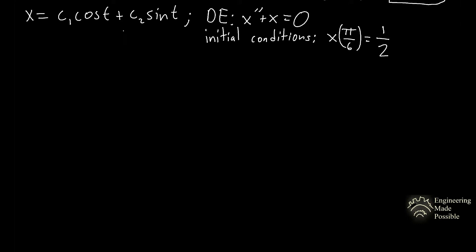For the second problem, we have the differential equation x'' + x = 0, with the two-parameter family of solutions x = c₁ cos(t) + c₂ sin(t). It's called a two-parameter family because it has two arbitrary constants. We are given an initial condition: x(π/6) = 1/2.